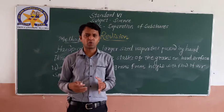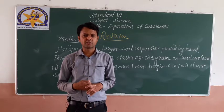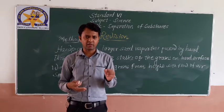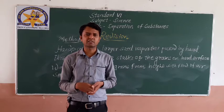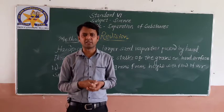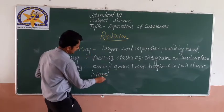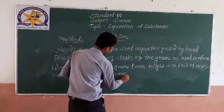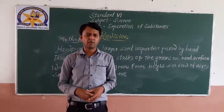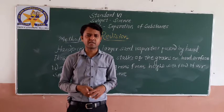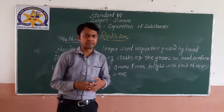Next is sieving. Sieving is done with the help of a sieve. You all know construction sites use sieves, and farmers also many times use the sieve. A sieve is made up of metal having small holes on it. If you pour grains or other things on it, the larger-sized impurities get separated with the help of the metal sieve.